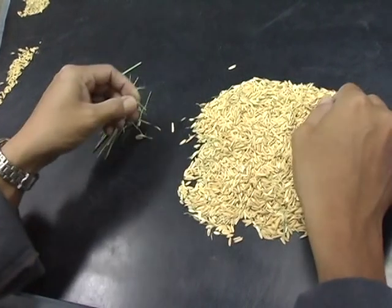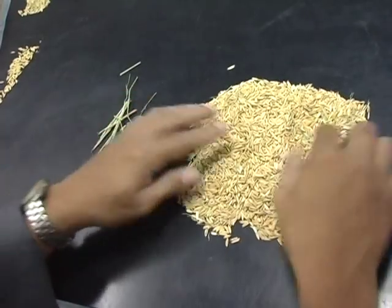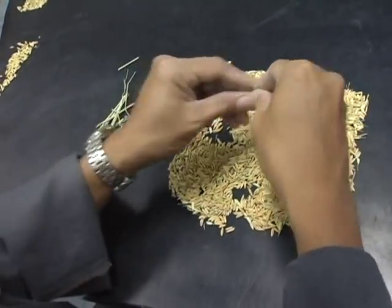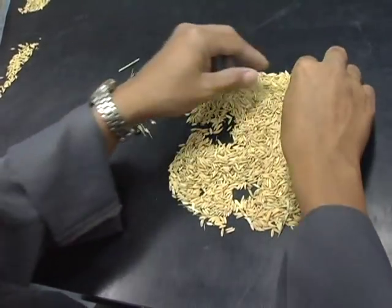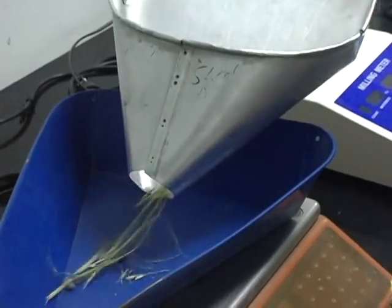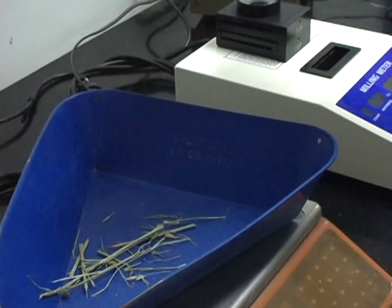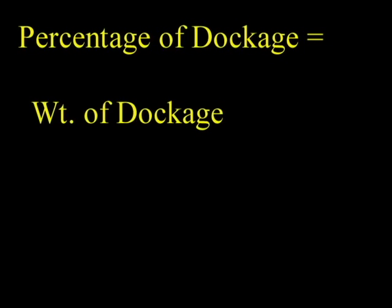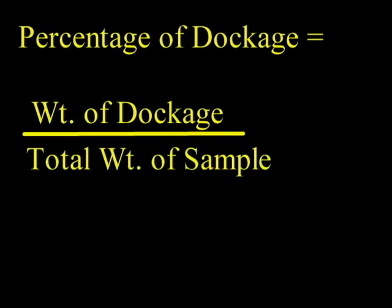Remove light foreign matter, stones, wheat, and seeds from a 100-gram sample. Next, obtain the total weight and then compute the dockage percentage as follows: weight of the dockage from the sample divided by the total weight of the sample, multiplied by 100.